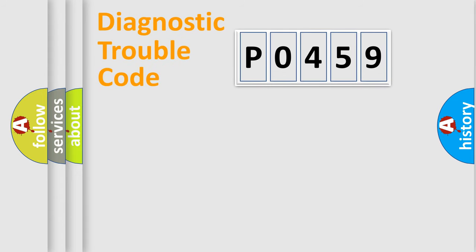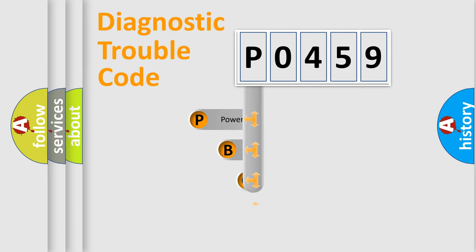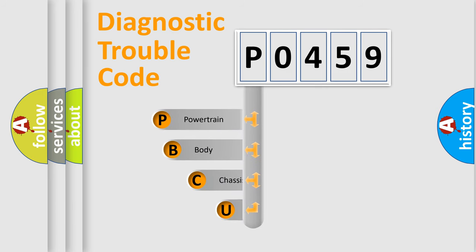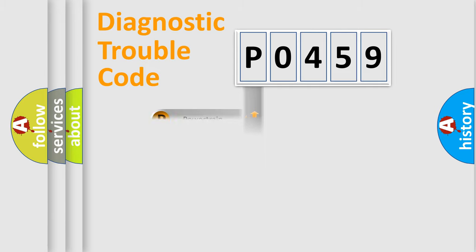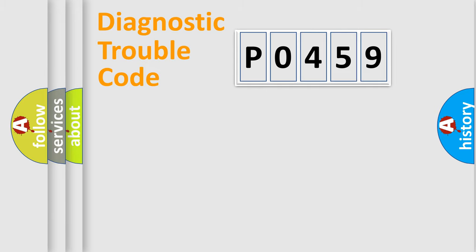First, let's look at the history of diagnostic fault code composition according to the OBD2 protocol, which is unified for all automakers since 2000. We divide the electric system of the automobile into four basic units: Powertrain, Body, Chassis, and Network.